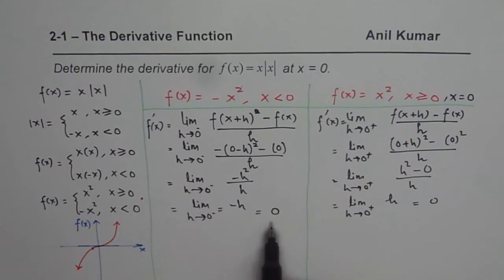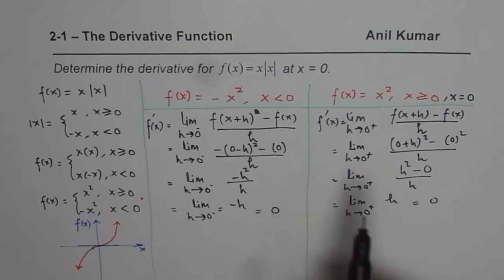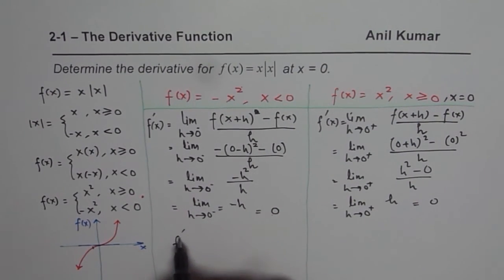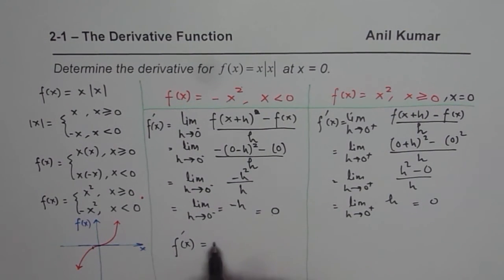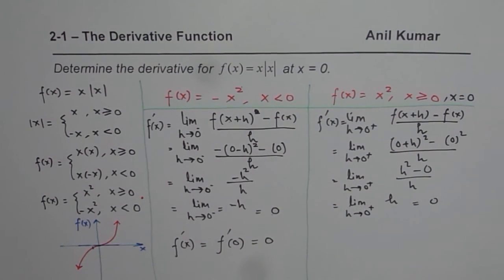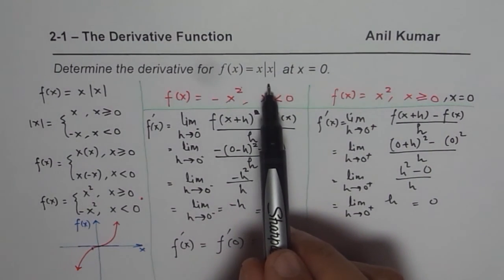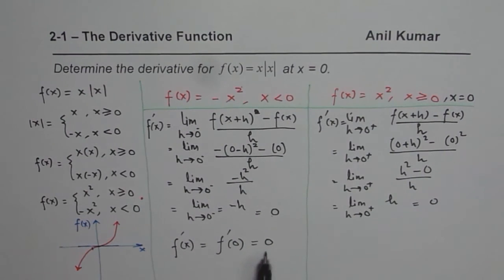So clearly, both the limits for the derivative, the rate of change or the slope of the tangent is 0. So what do we get? We get limit of this particular function, f'(0), which is f'(0), is definitely equals to 0. So the derivative of the function f(x) = x|x| at x equals 0 is indeed 0, which you can now confirm algebraically also.